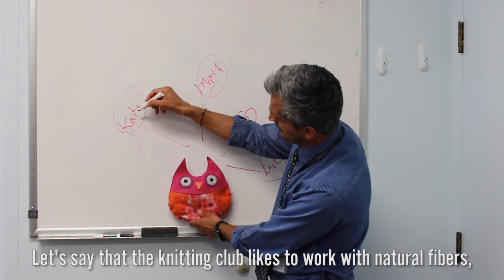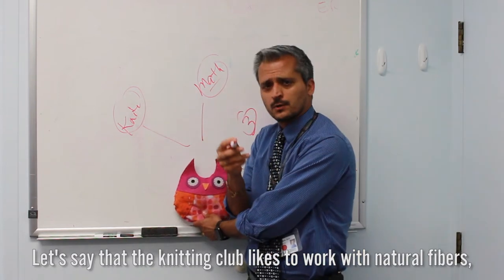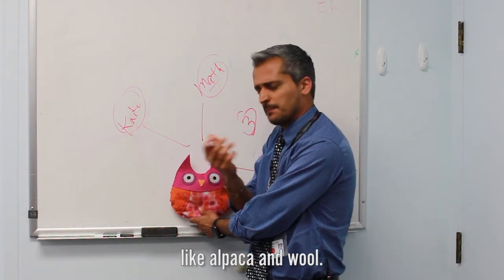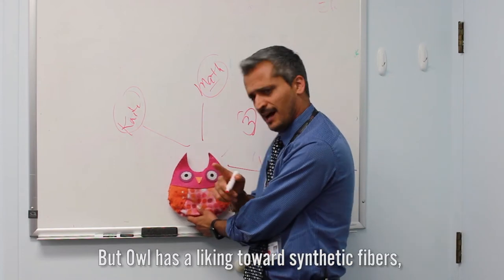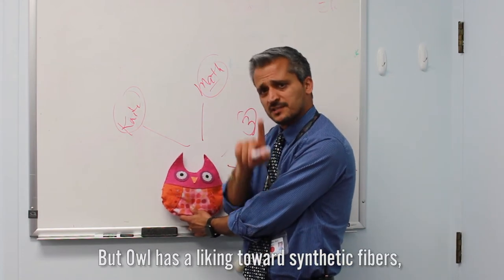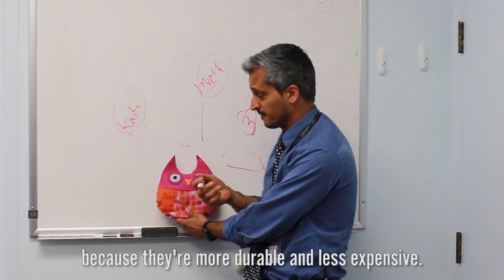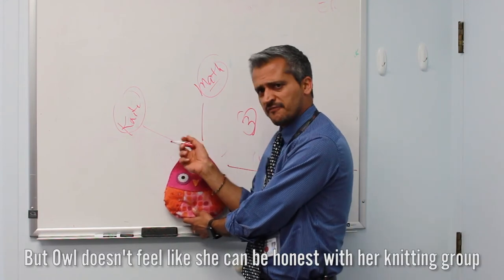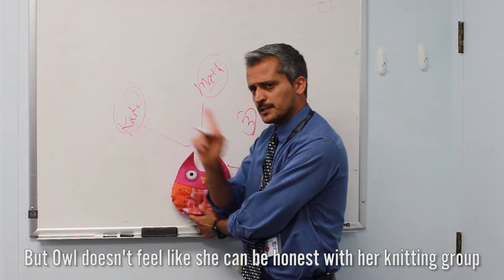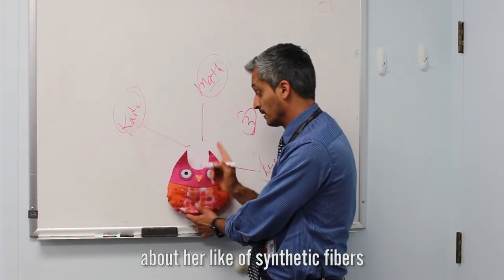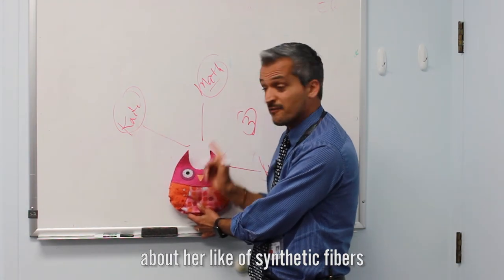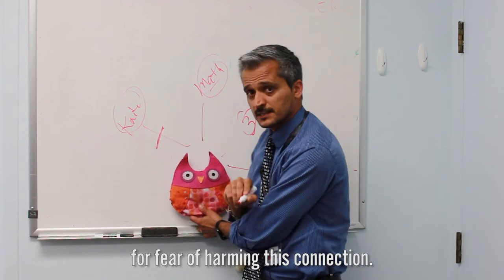Now let's say that the knitting club likes to work with natural fibers like alpaca and wool, but owl has a liking towards synthetic fibers because they're more durable and less expensive. But owl doesn't feel like she can be honest with her knitting group about her preference for synthetic fibers for fear of harming this connection.